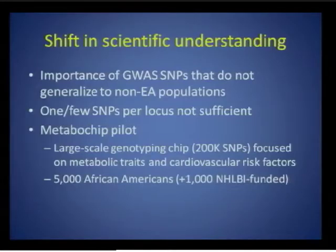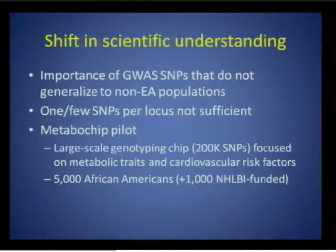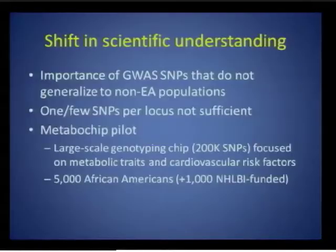The Metabochip, as it was called, included fine-mapping SNPs from the 1000 Genomes Project for loci related to metabolic traits and cardiovascular risk factors. Using this chip would effectively enable PAGE to take population-specific linkage disequilibrium into account and potentially identify independent or secondary signals underlying the original GWAS locus. PAGE pursued a pilot study of the Metabochip in approximately 6,000 African Americans, mostly using ERA funding.